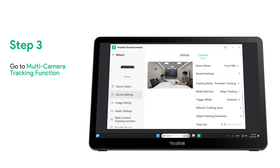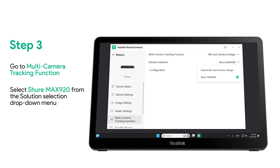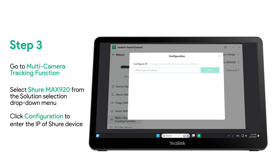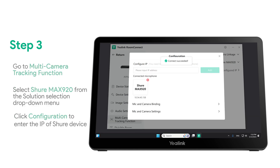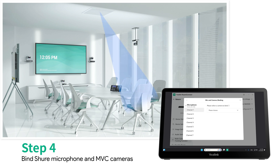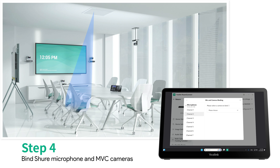Step 3: go to the multi-camera tracking function. Select ShureMXA 920 from the solution selection drop-down menu. Click Configuration to enter the IP of the Shure device. Step 4: bind Shure microphones and MVC cameras. Select the microphone channel to bind the same camera preset as the channel coverage area — a channel can only bind a unique camera preset.